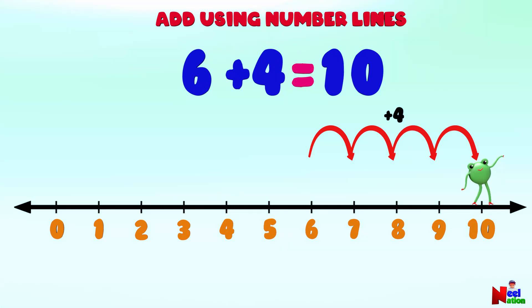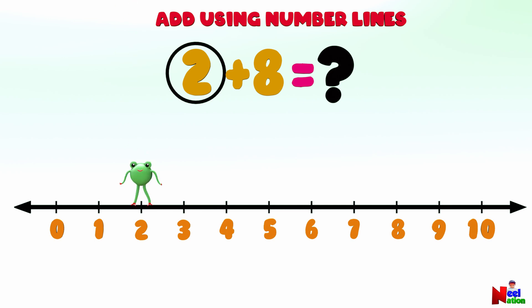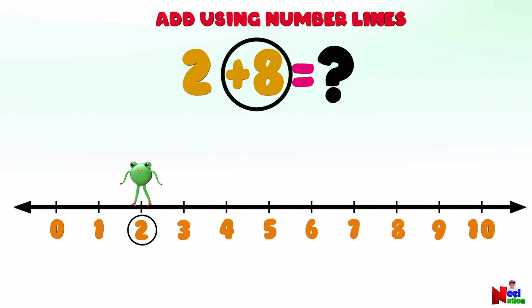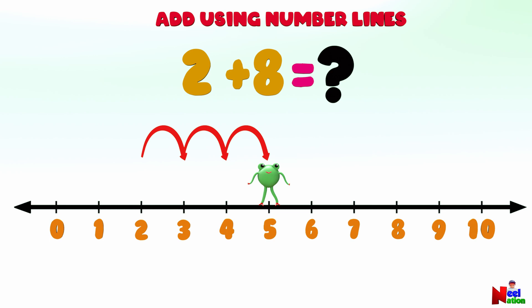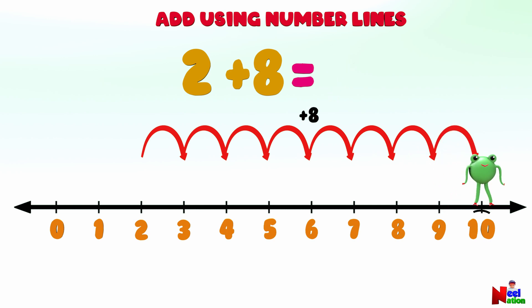What is 2 plus 8? Can you find 2 on the number line? Starting from number 2, Mr. Lutu will jump 8 points forward to the right. 1, 2, 3, 4, 5, 6, 7, 8. Where is Mr. Lutu? At number 10! 2 plus 8 equals 10. Brilliant!